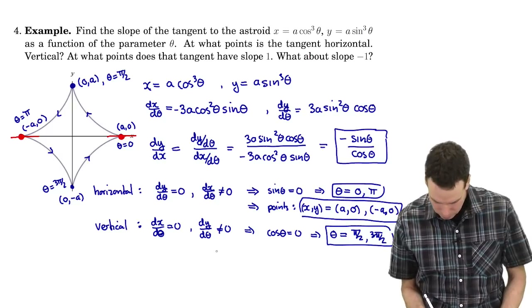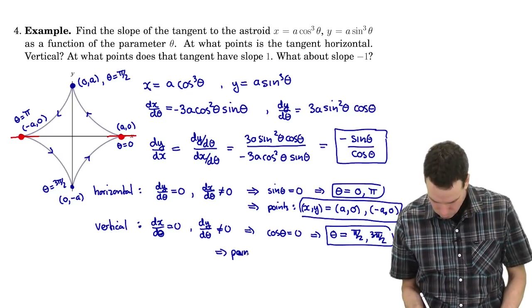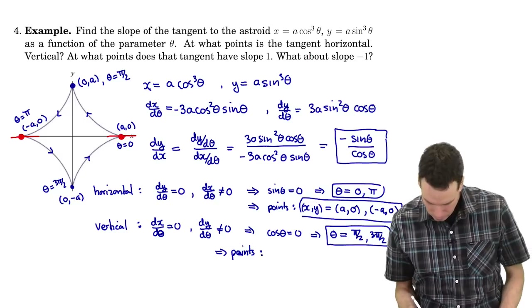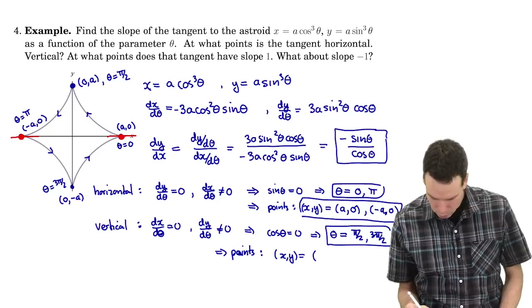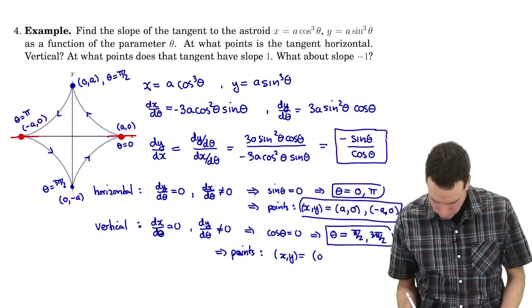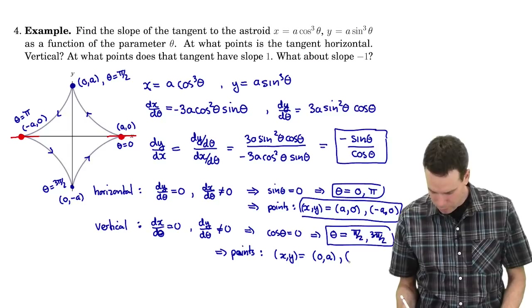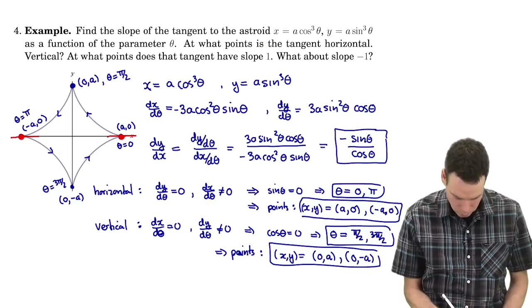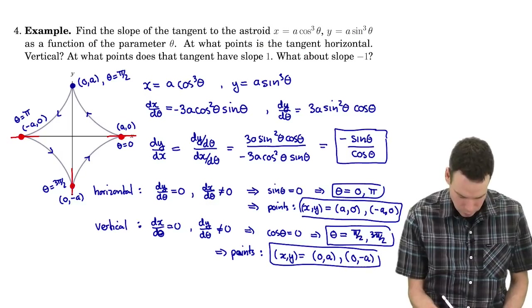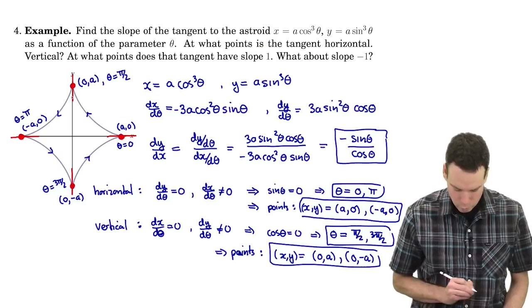Plugging these into our parametrization to get the points: when we plug in π/2, cos(π/2) is 0, giving us (0, a). When we plug in 3π/2, we get (0, −a). So those are the points where we have a vertical tangent line.